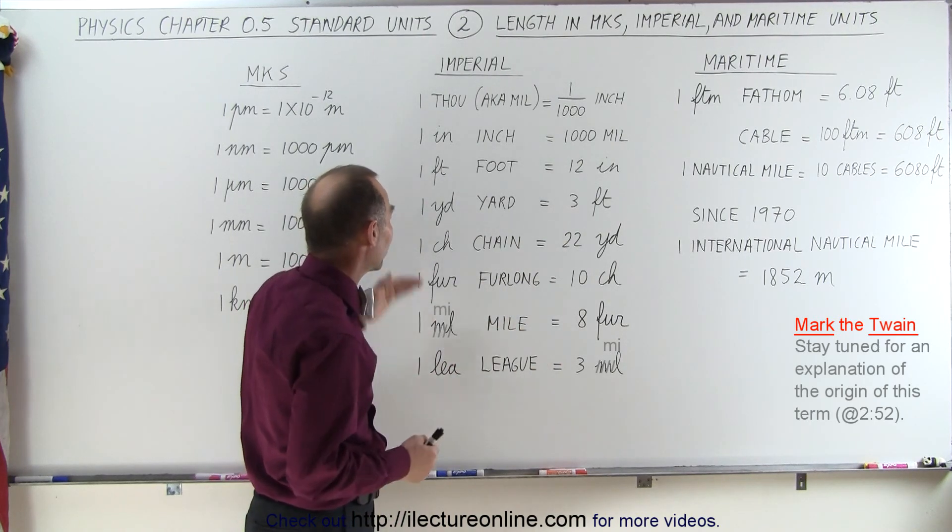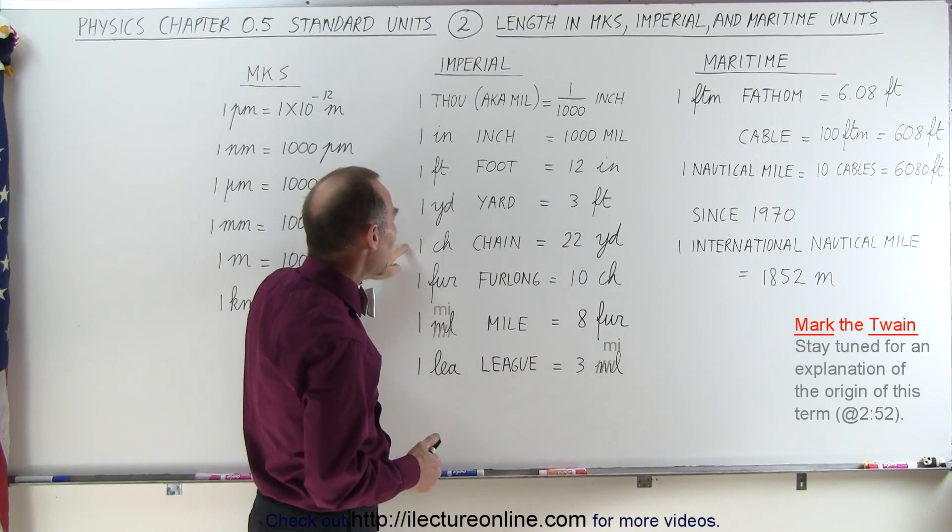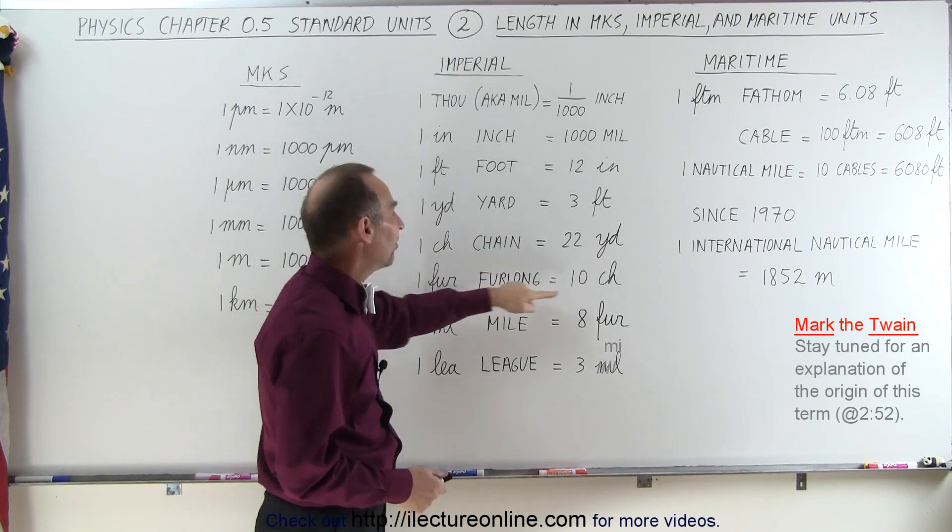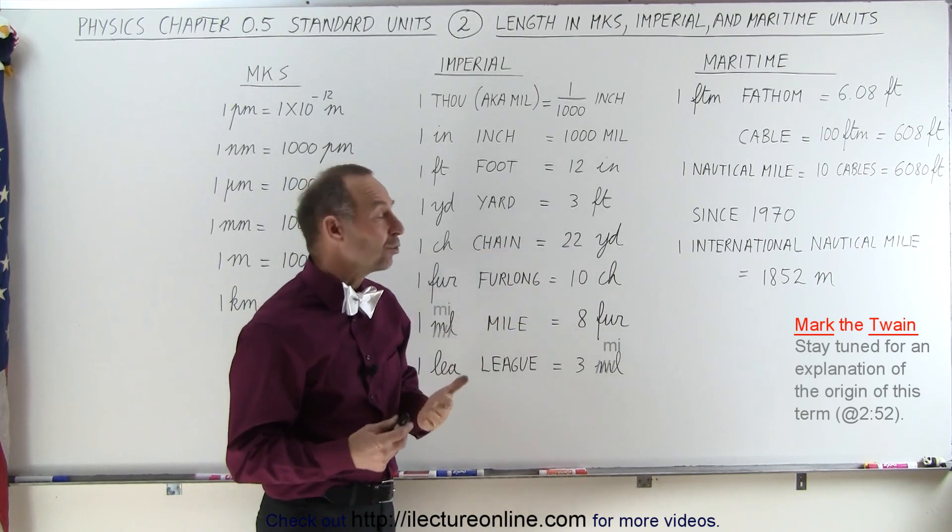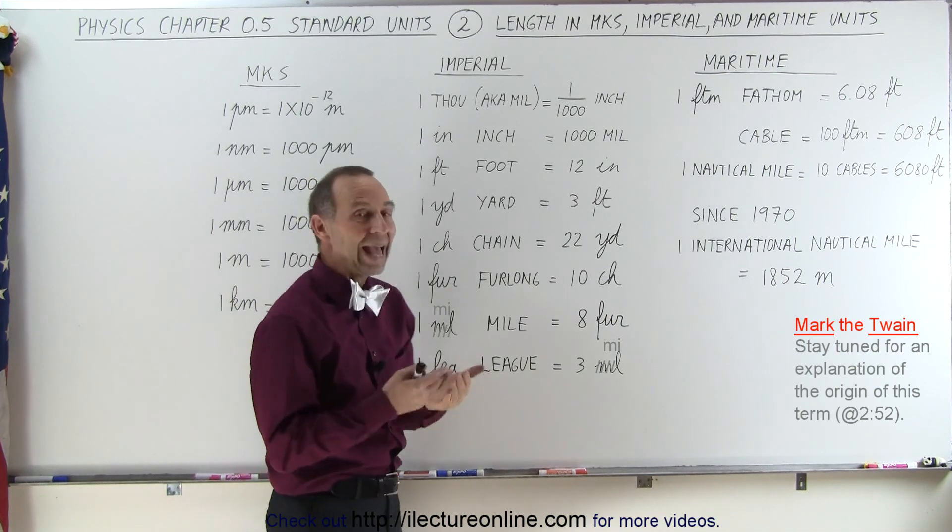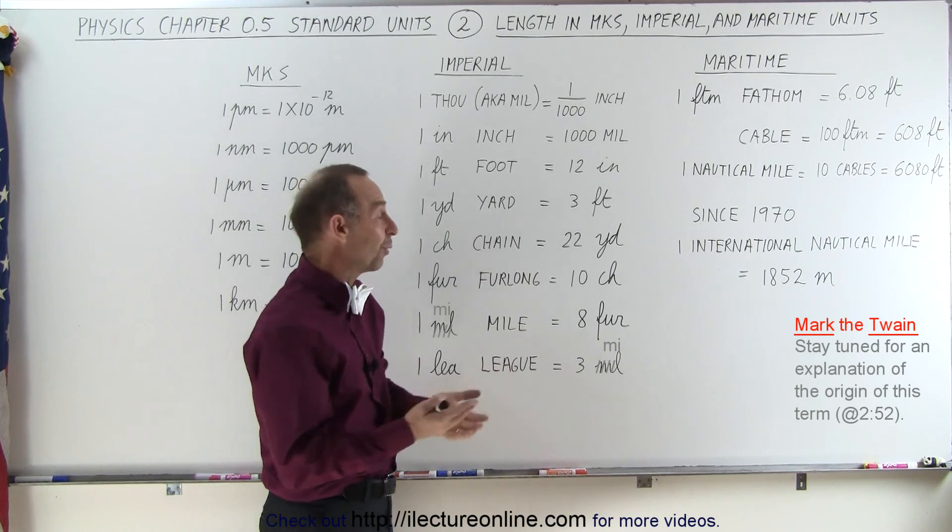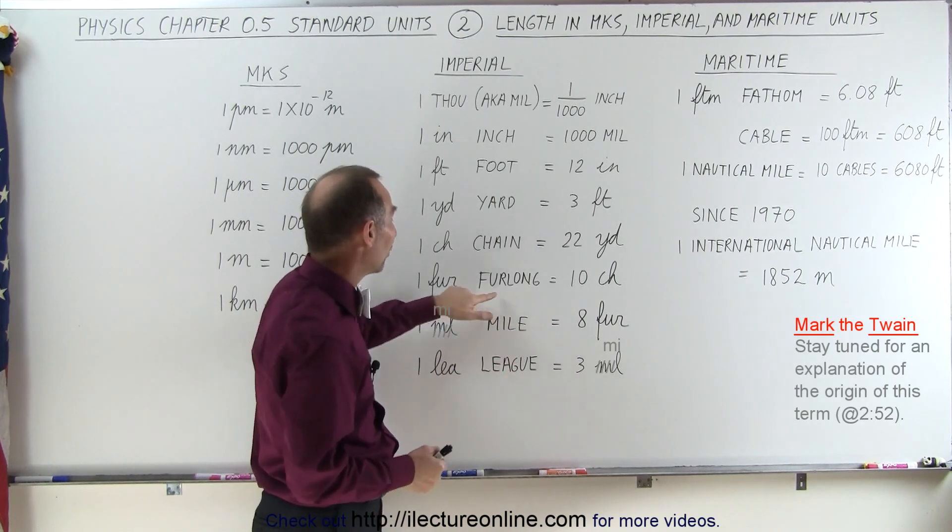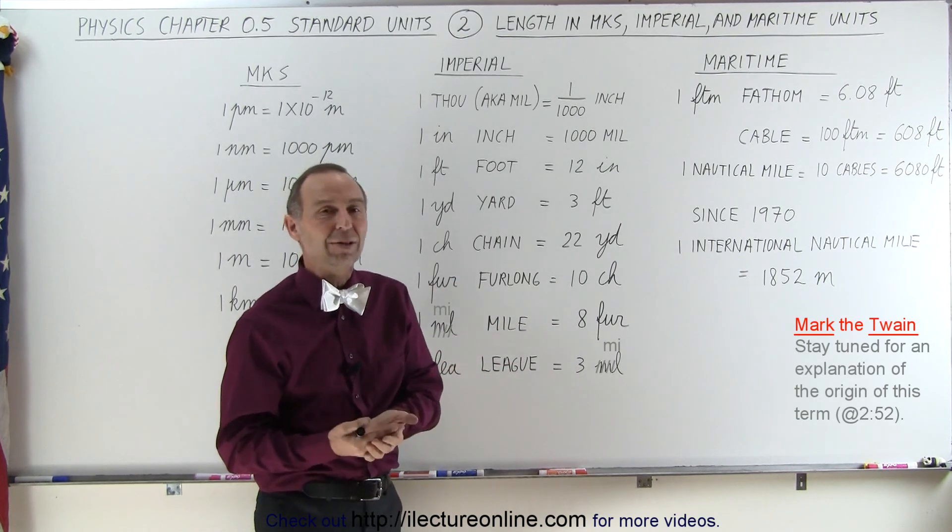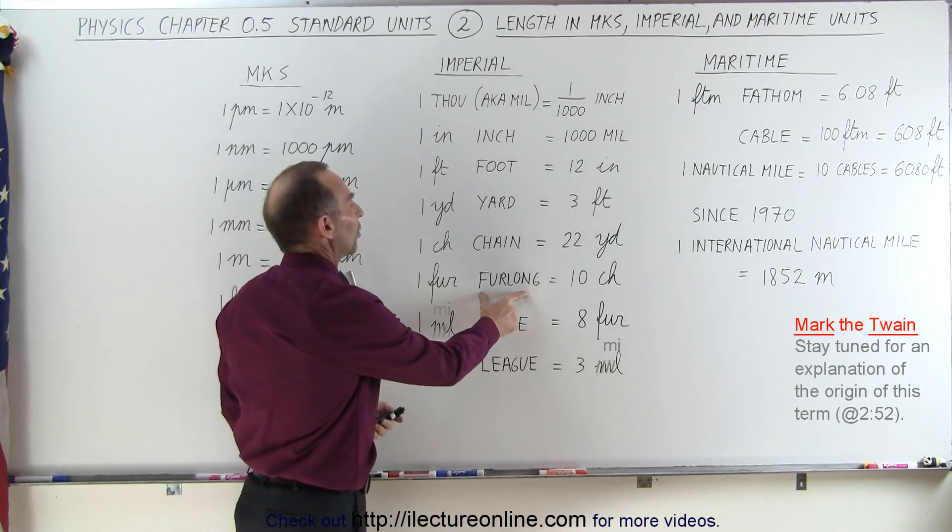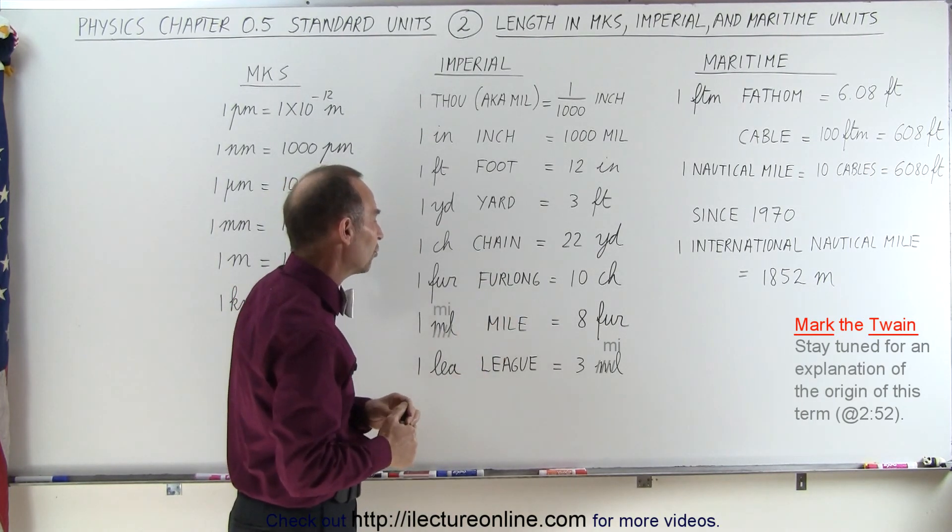A yard is almost the size of a meter, just shy of a meter. A chain is 22 yards, and a furlong is 10 chains, that makes it 220 yards, which is one half the distance around an Imperial track that used to be 440 yards. So one furlong would be half a lap around the track, and even with a 400 meter track, it's slightly more than halfway around the track.